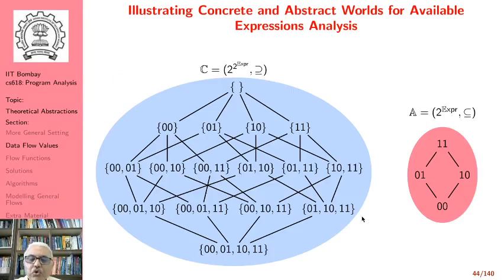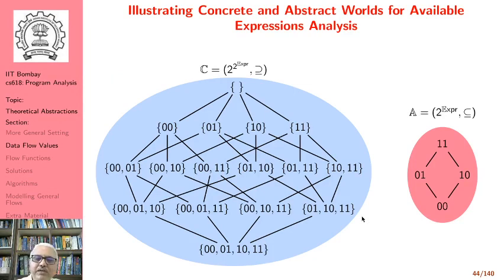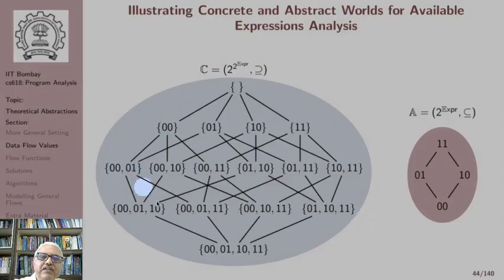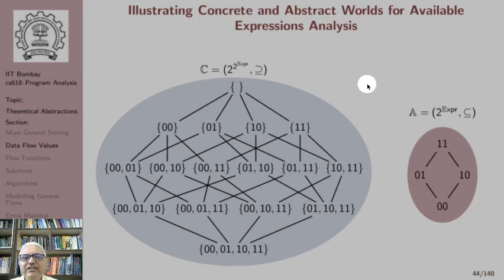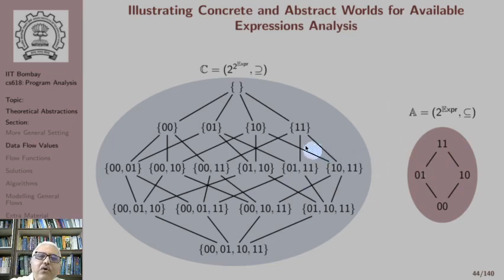We have shown all possible values, ignoring the standard semantics and showing only the instrumented semantics. This is our concrete world and this is our abstract world. It is easy to see why working with the abstract world is preferable: the abstract world is smaller and more compact, while the concrete world has many more values.